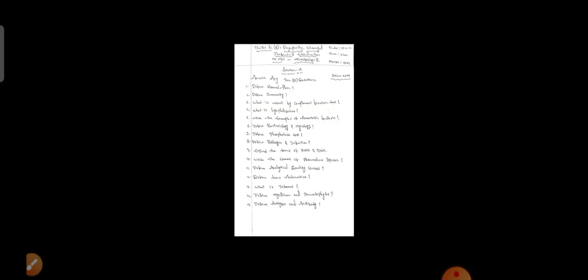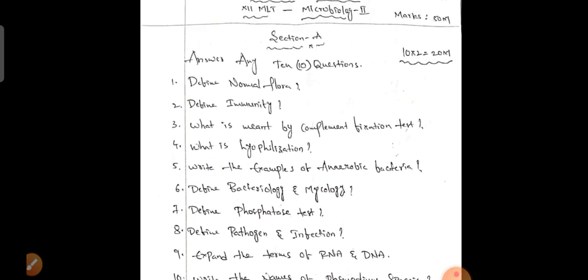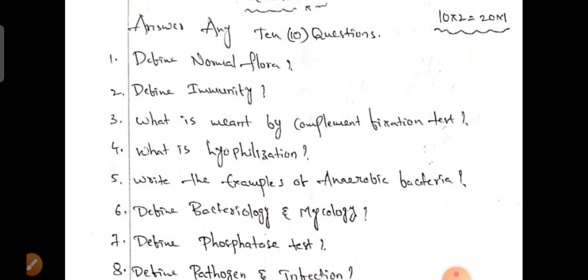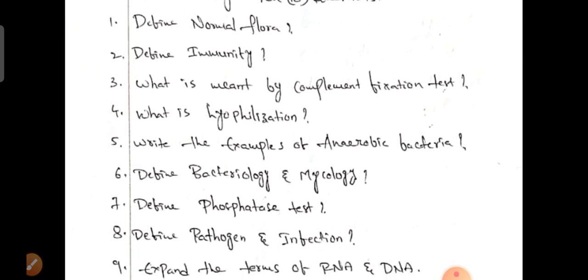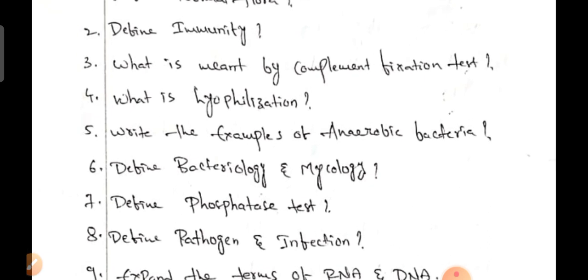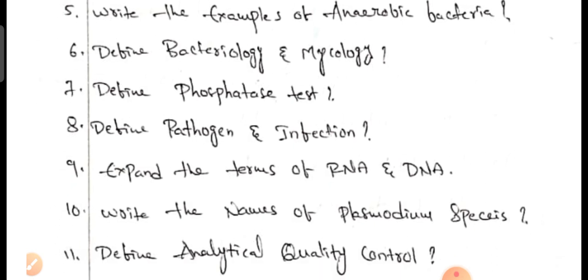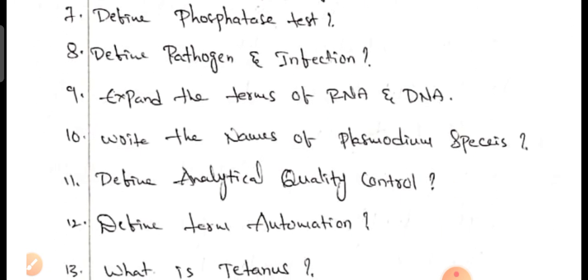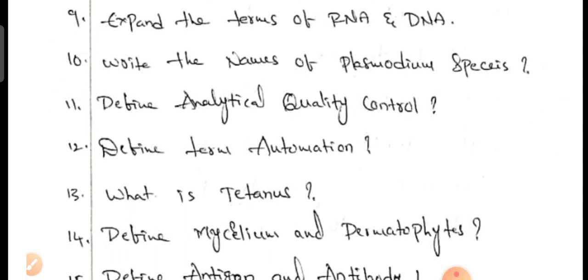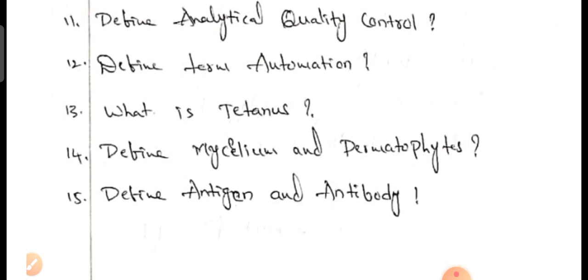For Section A short questions, important topics include: different normal flora, different immunity, what is meant by complement fixation test, what is hypersensitization, examples of anaerobic bacteria, different bacteriology and mycology, different phosphate tests, different pathogens and infection, expand the terms RNA and DNA, write the norms of plasma species, different analytical quality control, different terms of automation, what is tetanus, different mycelium and dermatophytes, and different antigen-antibody.